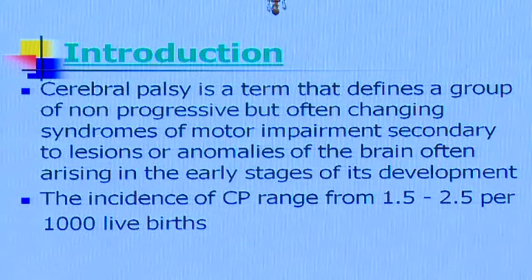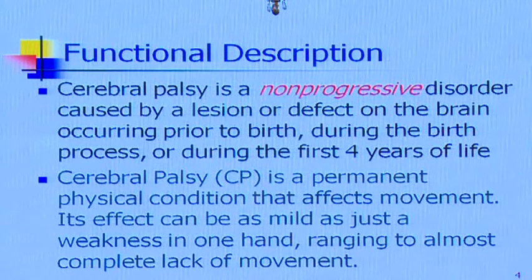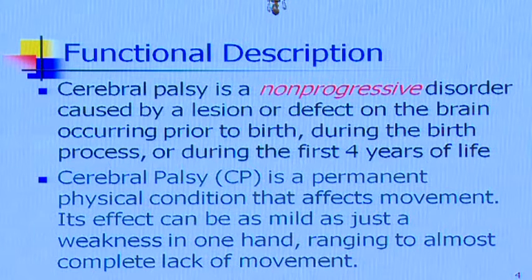The incidence given is up to 2.5–2.8% in different studies, and that is also the data I have. Cerebral palsy is a non-progressive disorder caused by a lesion or defect on the brain occurring maybe prior to birth, during birth, or during the first four years of life. So it's not always that cerebral palsy happens at birth.